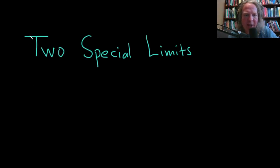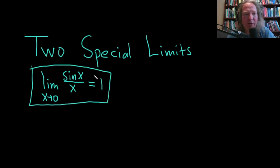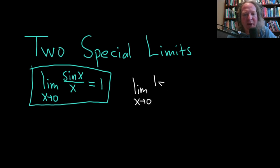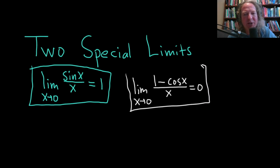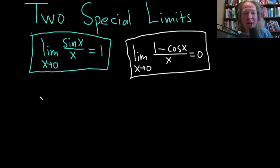Let's discuss two special limits that come up a lot in calculus. The first is: the limit as x approaches 0 of sin(x)/x = 1. This is worth memorizing. The second is: the limit as x approaches 0 of (1 - cos x)/x = 0. This is also important but doesn't come up as often in exercises.